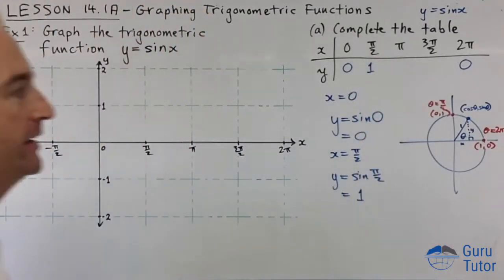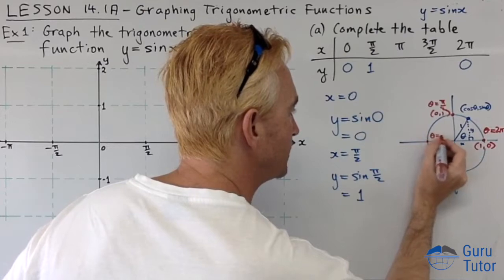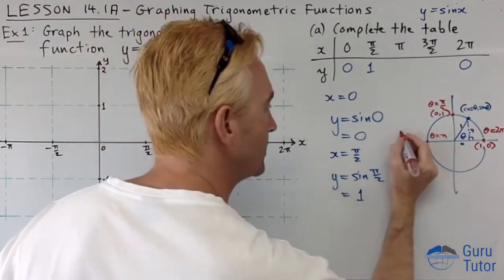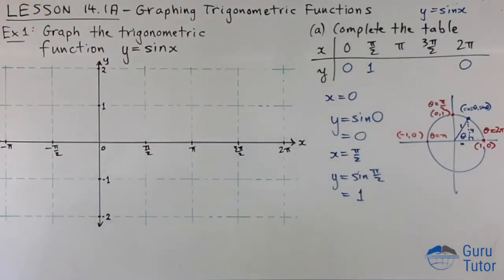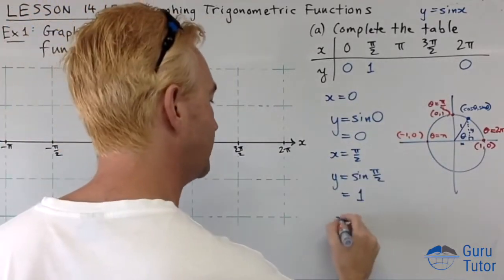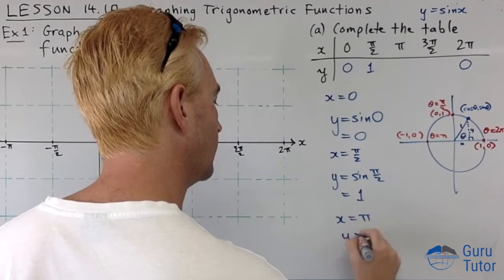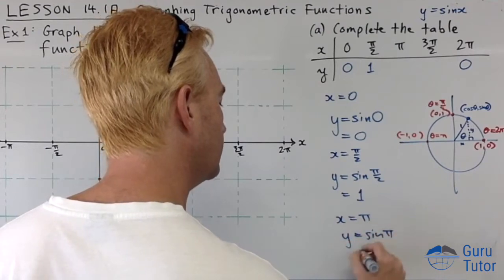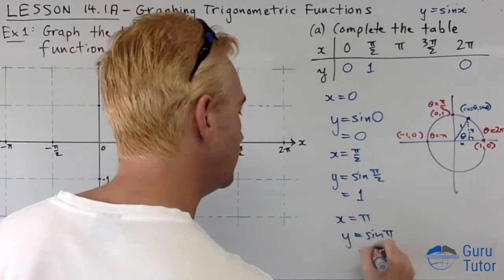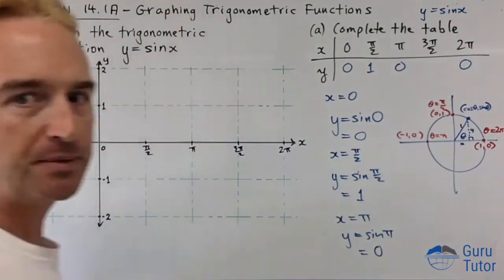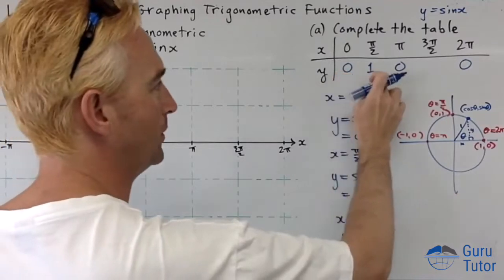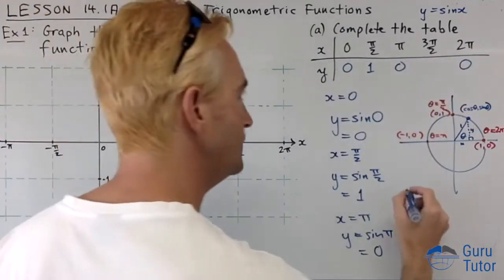What about π when we are over here? This is when theta equals π, 180 degrees. What are the coordinates at that point? Minus 1, 0. Sin is always the y coordinate. So when x is π, y is sin π which equals 0. So it goes 0, 1, 0. What do you think will be in between? Is there a pattern? Maybe 0, 1, 0, 1, 0. Let's check it.